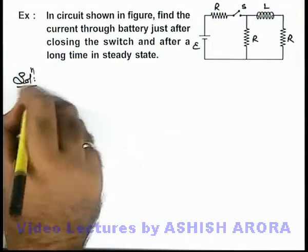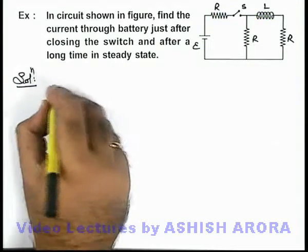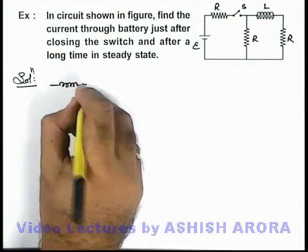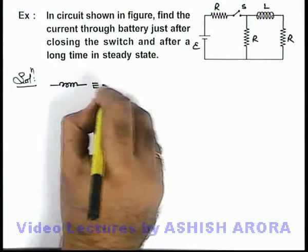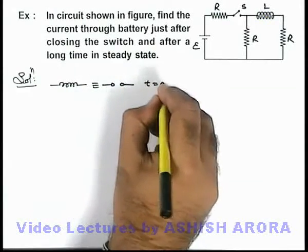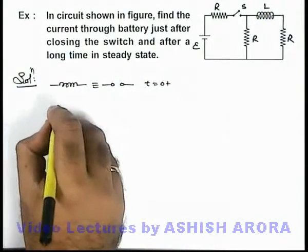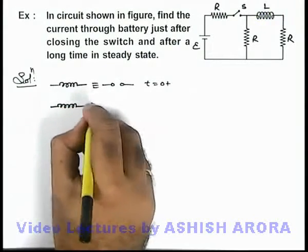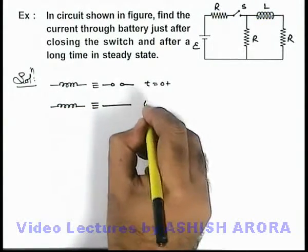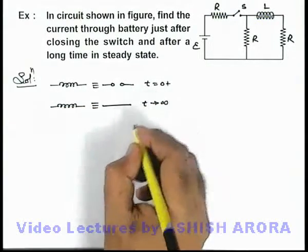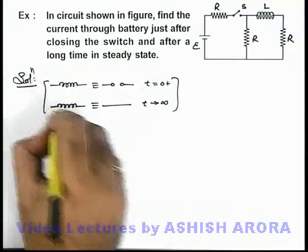Here we have already studied that just after closing the switch an inductor behaves like an open circuit, this is at moment t equal to zero plus, and when we talk about steady state an inductor behaves like a straight wire that is t tending to infinity. The same logic we are going to use here.